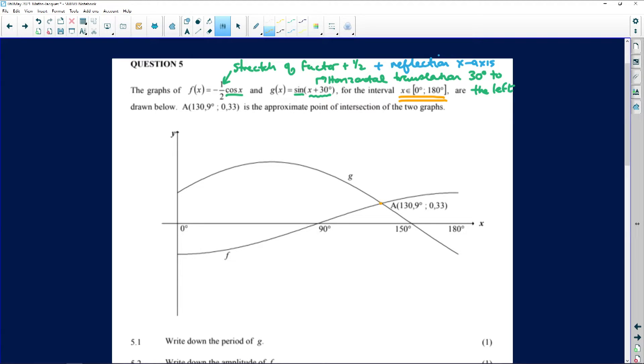Okay, the two graphs intersect. The g, this is the sine graph of x plus 30, and then the one at the bottom is minus a half cos x. Okay, still crossing at 90 and doing its usual thing. Okay, let's see what they want from us.